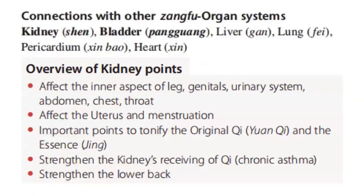Next is its connection with other zang organ and zangfu organ systems. It has connections with the kidney organ, the bladder, the liver, the lung, the pericardium, and the heart.